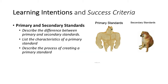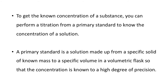So, to get the known concentration of a substance, you can perform a titration from a primary standard to know the concentration of the solution. You want to know the concentration of a substance, so what you need to do is use a primary standard, which you already know the concentration of, to work out the concentration of the other substance.